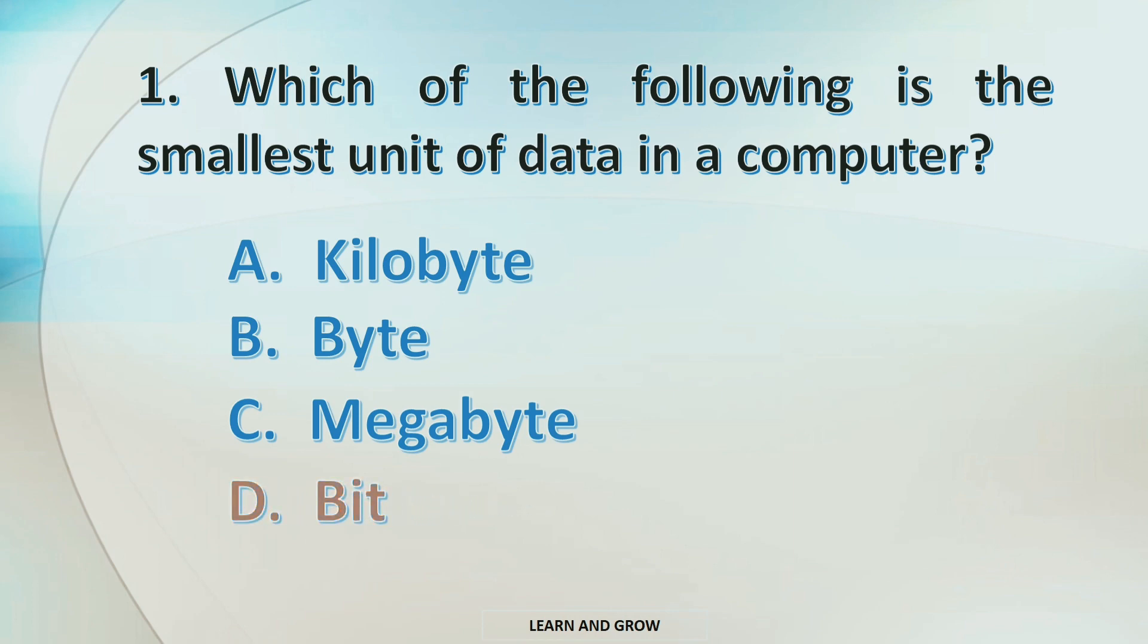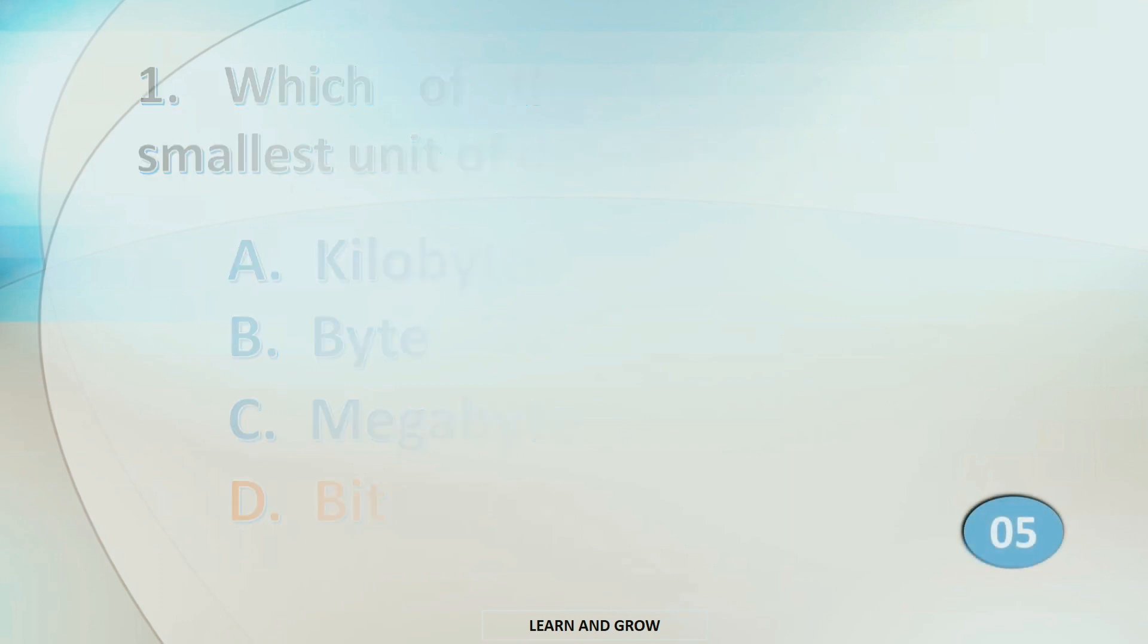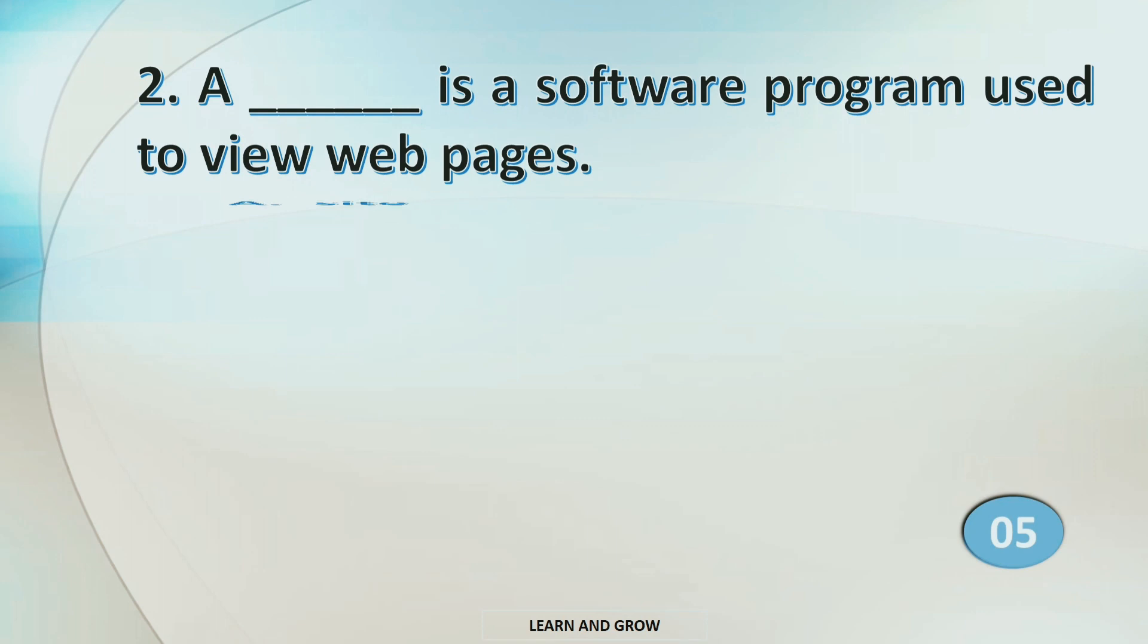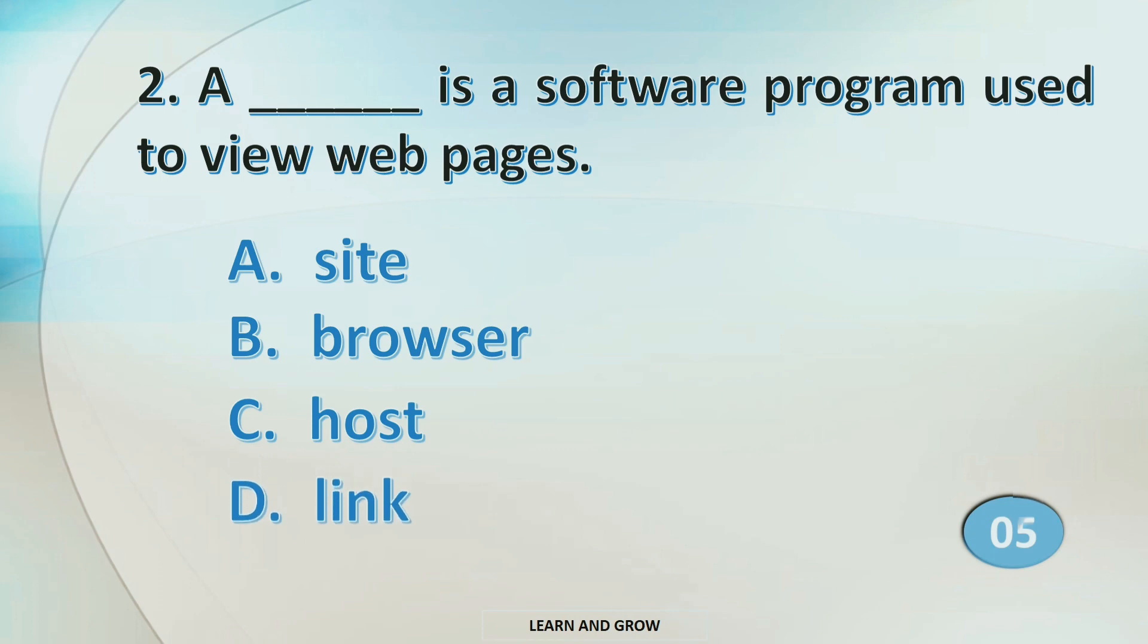The right answer is option D: Bit. Blank is a software program used to view web pages. Option A: Site, B: Browser, C: Host, or D: Link.